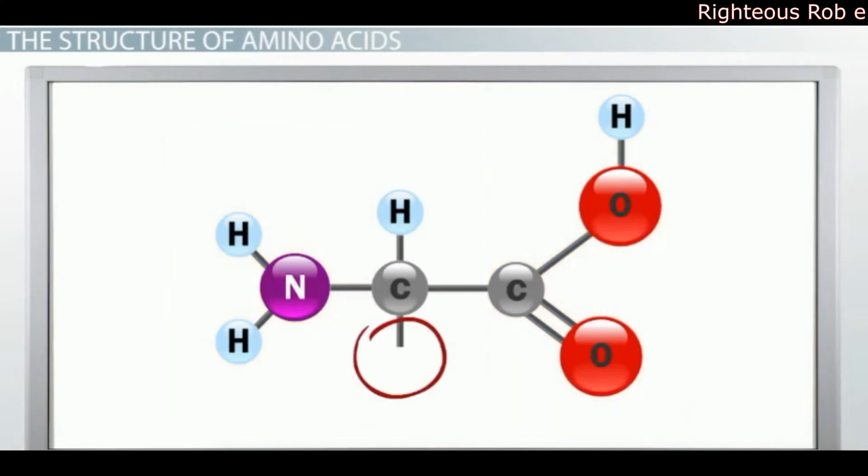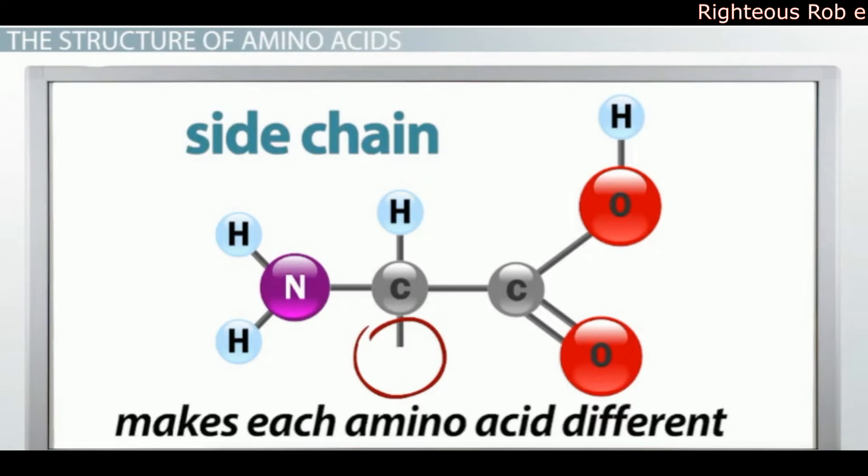This leaves one additional bond around the central carbon. Each amino acid is bound to a unique chemical group at this position called its side chain. It is this side chain that makes each amino acid different, giving each amino acid a unique set of chemical properties.